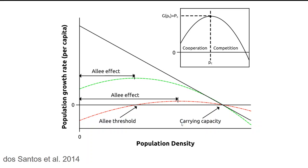Another way to look at this is that there's a whole range of Allee effects. You could have a population growing just as predicted by a simple logistic model — represented by the black line — with high per capita growth at small population densities, decreasing as you approach carrying capacity, and eventually negative growth when carrying capacity is crossed. There's also the idea of a weak Allee effect where there's still positive population growth, represented by the green line. Represented by the red line is a much stronger Allee effect.